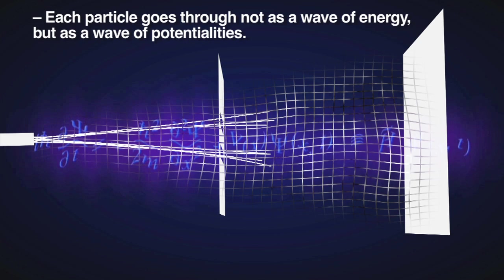However, after several particles are fired individually, an interference pattern starts to emerge. But how could that be if they are going through individually and not interfering with each other? The conclusion was reached: each particle goes through not as a wave of energy, but as a wave of potentialities. A wave of all the possible paths it could take interferes with itself knowing which are the most likely landing spots and which are the least likely, and then collapses to one definite position once it is observed on the back film.